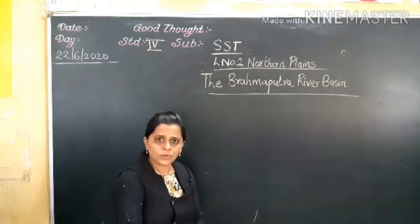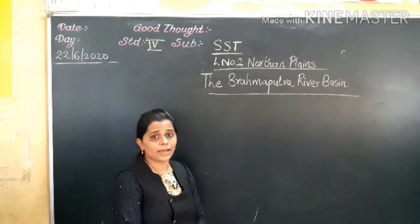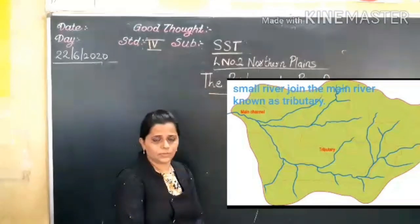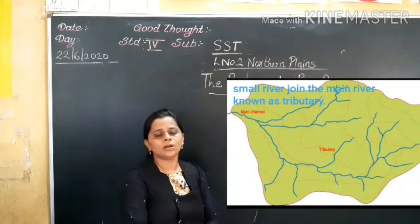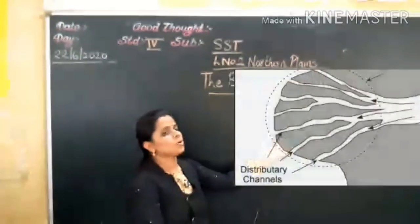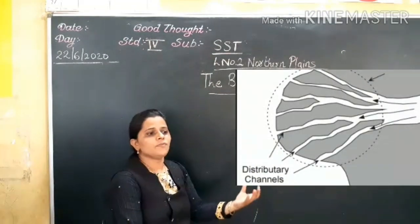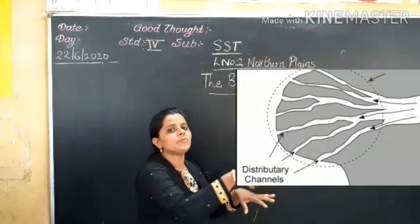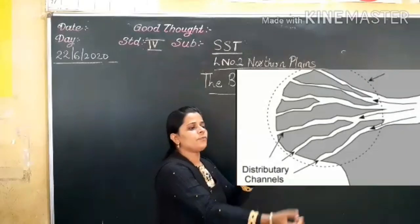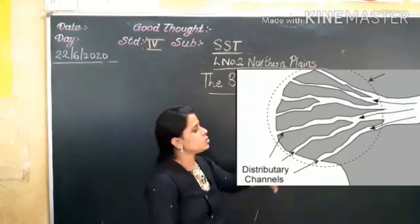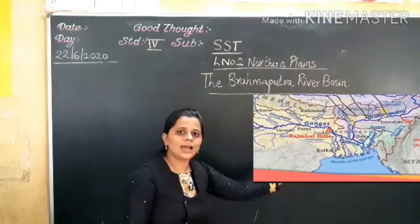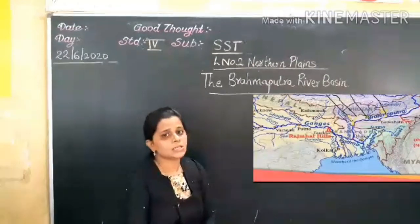Now, you may be confused about the word distributary. Earlier we learned about tributaries — a river which joins the main river is a tributary. A distributary, on the other hand, is a channel that comes out of the main river. It is a river branch that does not go back to the main river — it distributes water. The river Padma is the water of the Ganga, which changes its name over there.